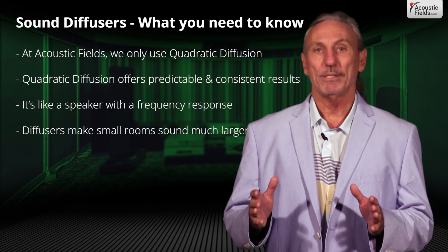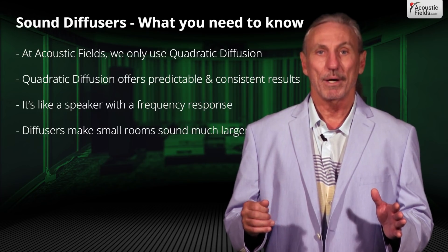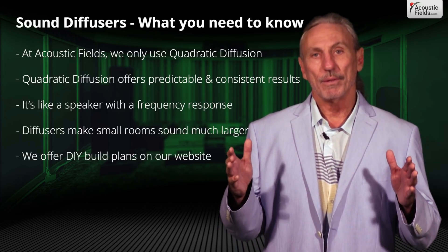Let's look at the process of building a sound diffuser. We have DIY kits on our website. We look at it as two parts: a cabinet, and inside the cabinet, the diffuser itself. The diffuser is a series of vertical slots with different depths of wells. The depth of the well is based on quarter wavelength, and the width of the well is based on half wavelength — that combination of width and depth produces the frequency response, which you must match to your room.